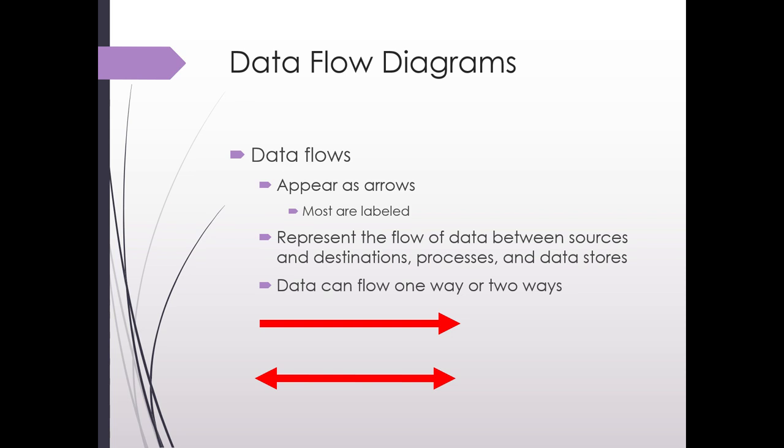Next we have the data flows and these are shown as arrows. We can have an arrow point in one direction if the data flows only in one direction, or we can have a double-sided arrow to show that data is flowing in and out to the same destination. They're showing what types of pieces of data are flowing between processes, incoming from a data source or outgoing or incoming from a data store or outgoing to a data destination.